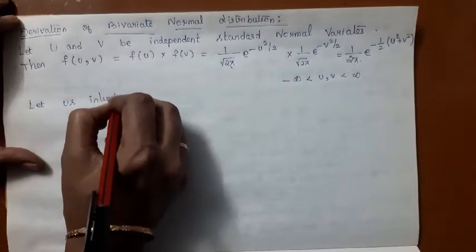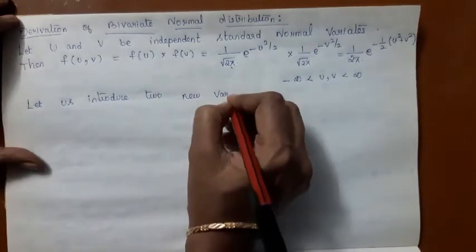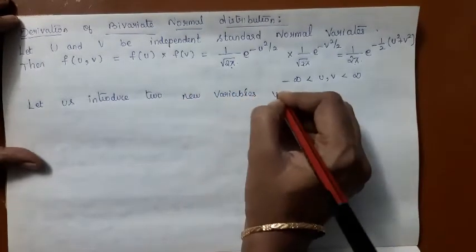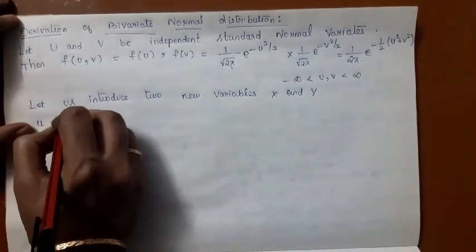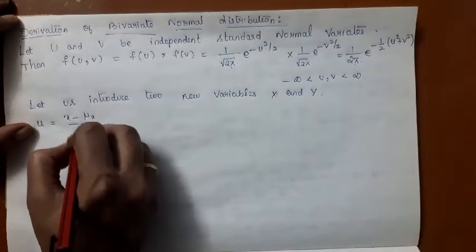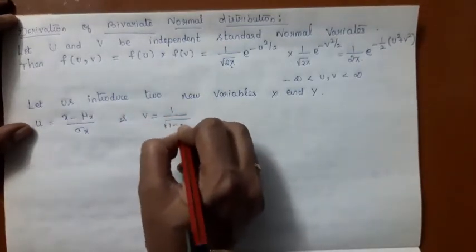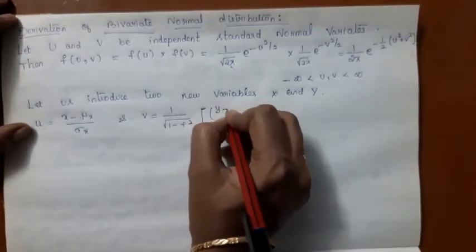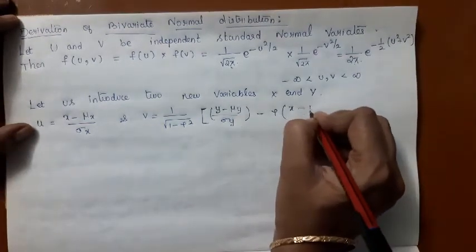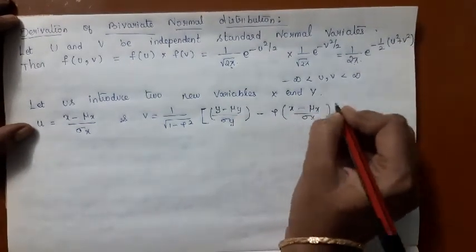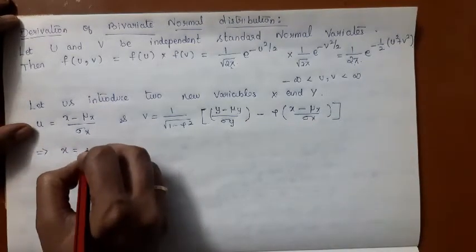Now let us introduce two new variables x and y. We represent u as (x − μx)/σx, and v as (1/√(1 − ρ²)) · [(y − μy)/σy − ρ·(x − μx)/σx].